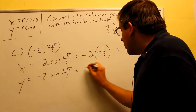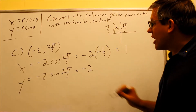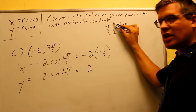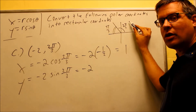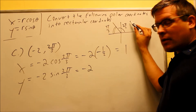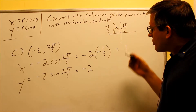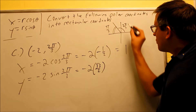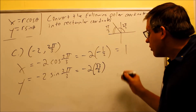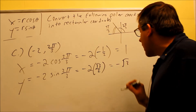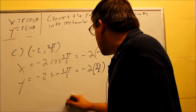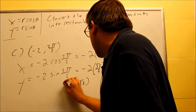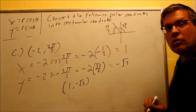For the y value, I'm using sine of 2 pi over 3. In the second quadrant, sine is positive, so it has the same value as sine of pi over 3 in the first quadrant. That means sine of 2 pi over 3 equals sine of 60, which is positive square root of 3 over 2. When I multiply negative 2 by positive root 3 over 2 and cancel the 2's, I get negative square root of 3. So the final answer written as a coordinate is (1, negative square root of 3). That's the equivalent rectangular coordinate.